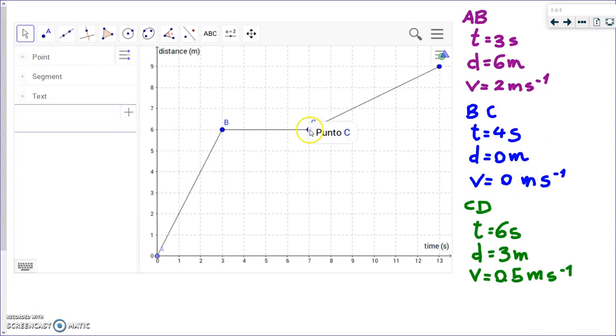And the speed is obviously zero meters per second. And here we are at the last part of the journey, from C to D. Again, we can look at how much is the time from C to D. You can do just thirteen minus seven, or you can just count the squares. But anyway, you get that it's six seconds. The distance traveled is three meters.